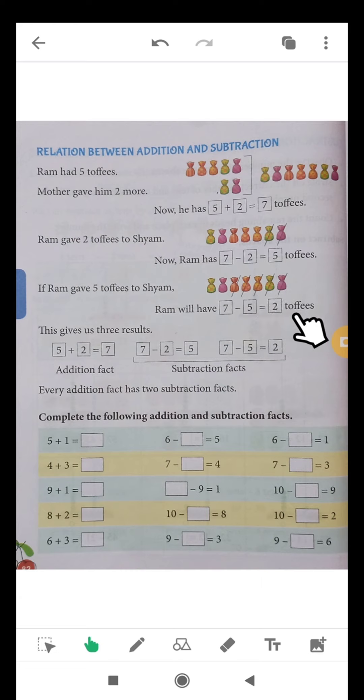This gives us three results. 5 plus 2 is equal to 7. This is called addition fact.